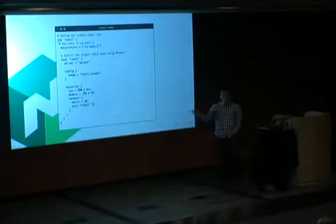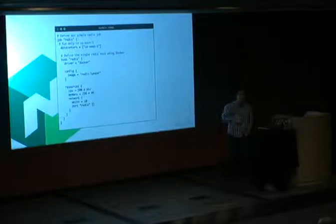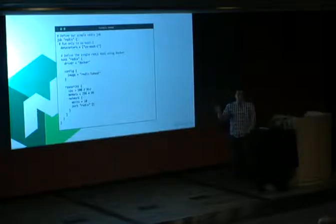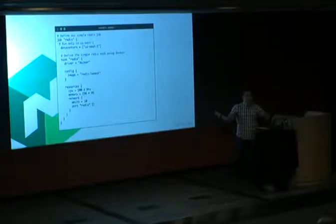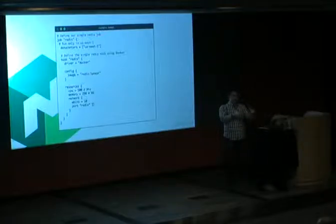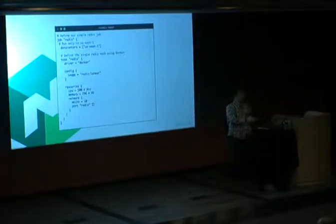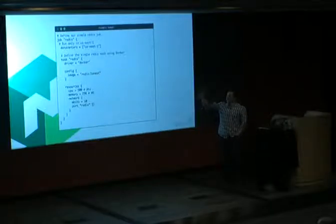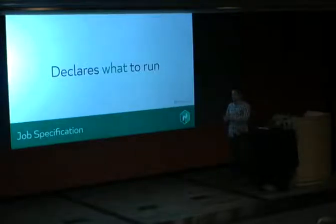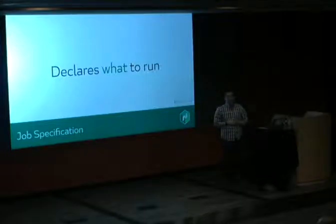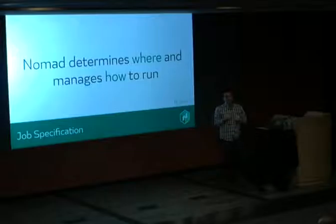In the job spec you describe the resources needed: some CPU, some memory, a requested amount of network bandwidth, and a port — you don't specify a number, just ask the scheduler to allocate one. The job specification is meant to be written by developers. If you're building a service, you write the spec, run it, and it's gone and running.